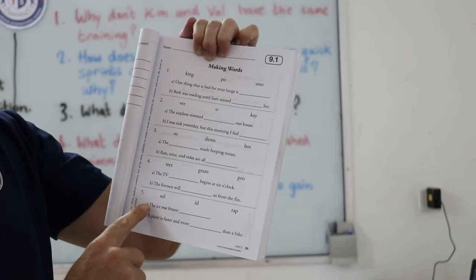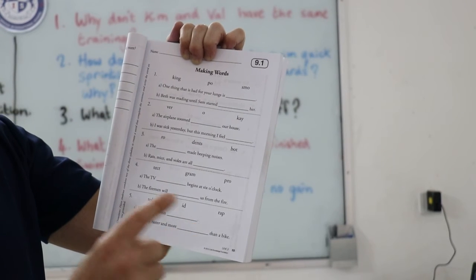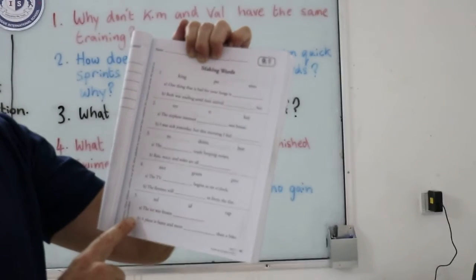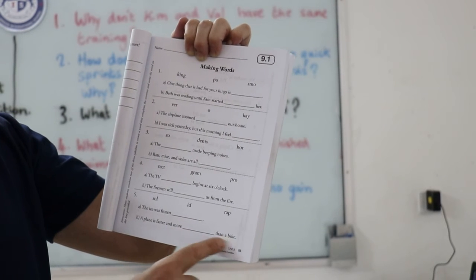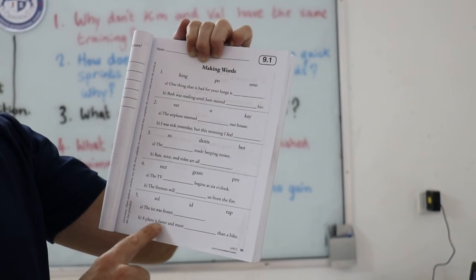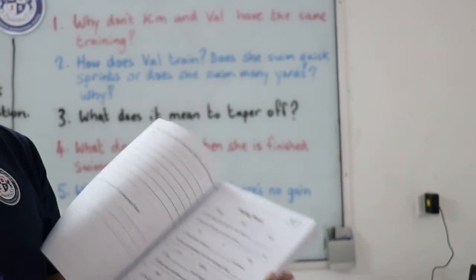Number five, part A, the ice was frozen what? B, a plane is faster and more what than a bike. And then open a page.